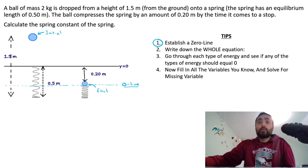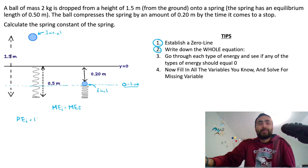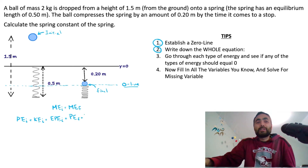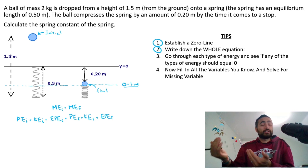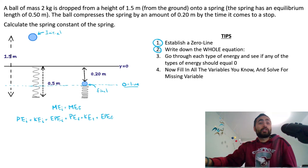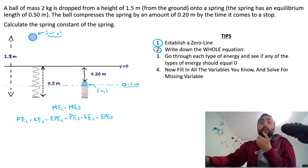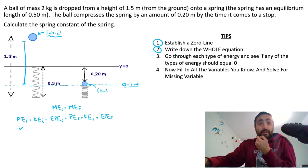Write down the whole equation: all of the energy at the beginning equals all the energy at the end. I know by this point you're getting tired of me doing all of this, and honestly I'm getting tired of doing it too. But as a teacher I've seen so many mistakes because people don't write it all out — they lose lots of points by trying to take shortcuts. Now let's go through what's zero. At the very beginning, is it at the zero line? No — it's at a certain height above the zero line, so there is potential energy initial. At the very end, is it at the zero line? Yes, so potential energy final is zero.